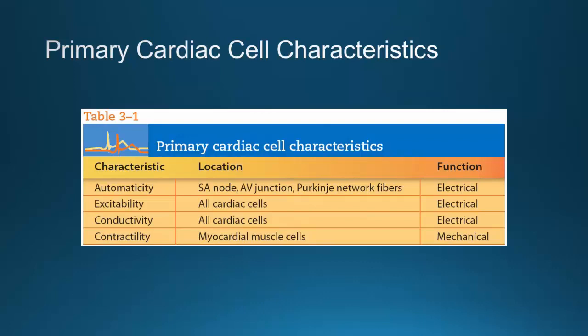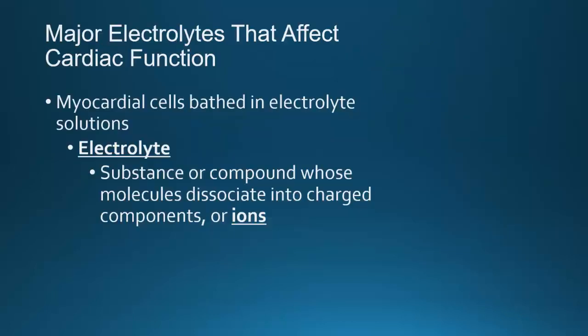Automaticity is found at your nodal tissues and along your electrical conduction network. Excitability means all cardiac cells have the ability to receive an outside stimulus. Conductivity means all cardiac cells will conduct. And contractility is again the mechanical function of the myocardial cells.